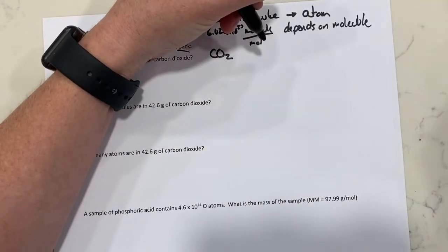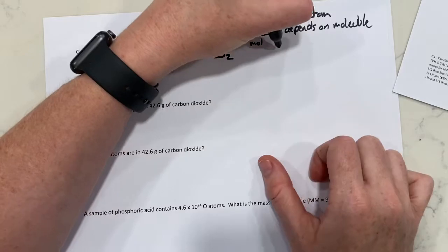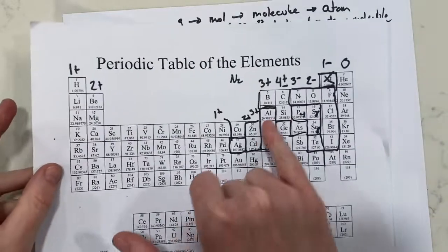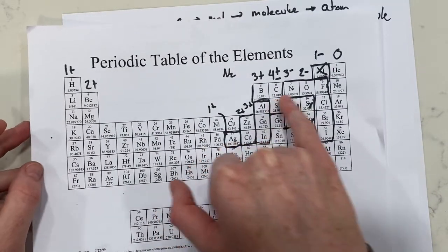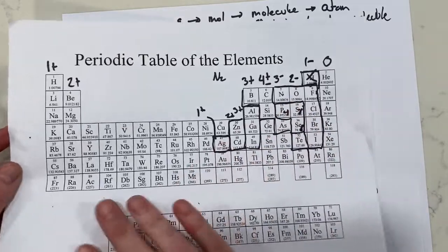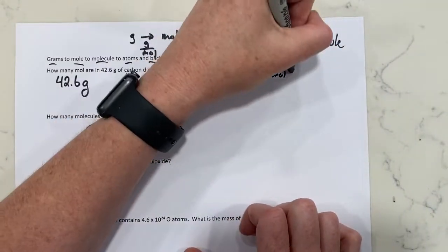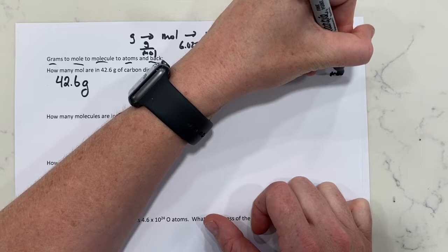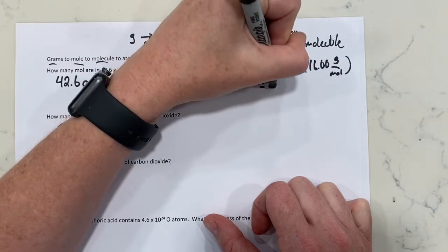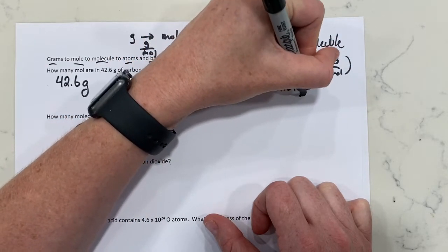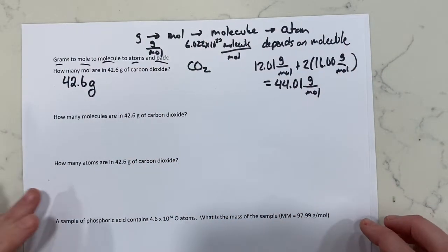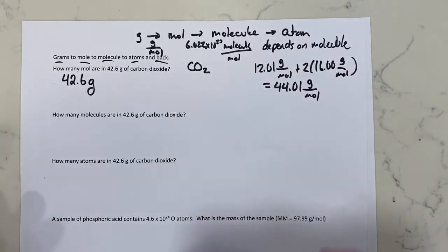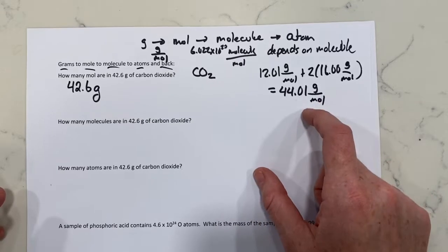The molar mass of carbon dioxide: carbon is 12.01 grams per mole, and oxygen is 16.00 grams per mole. With two oxygens, that's plus 2 times 16.00 grams per mole, which totals to 44.01 grams per mole. So the molar mass of carbon dioxide is 44.01 grams per mole. Oftentimes this will be given to you on an exam.